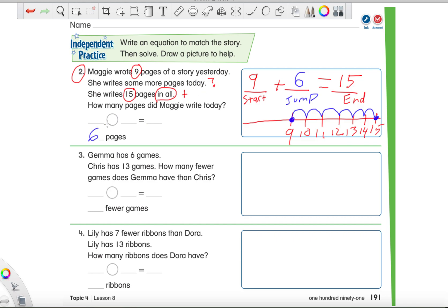So 6 jumps which means 9 plus 6 equals 15. So today she wrote 6 pages. So if you already wrote out the problem in the box, that's fine. You don't have to rewrite it here. But of course you always could. We would just say 9 plus 6 equals 15. That's it.